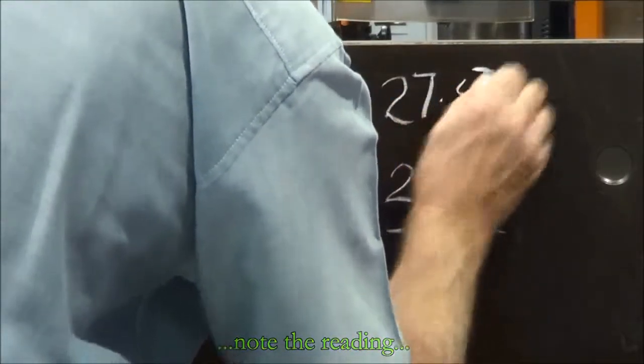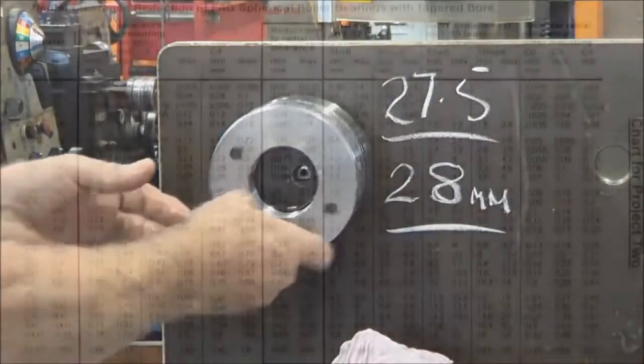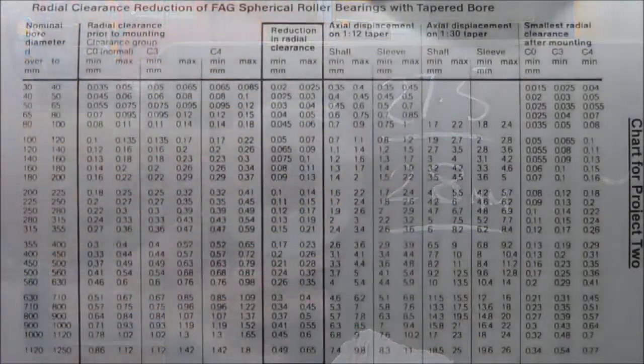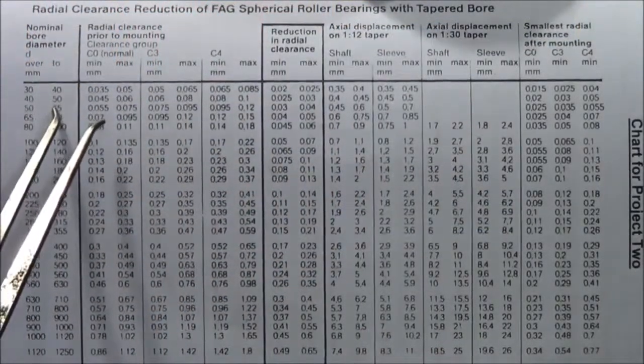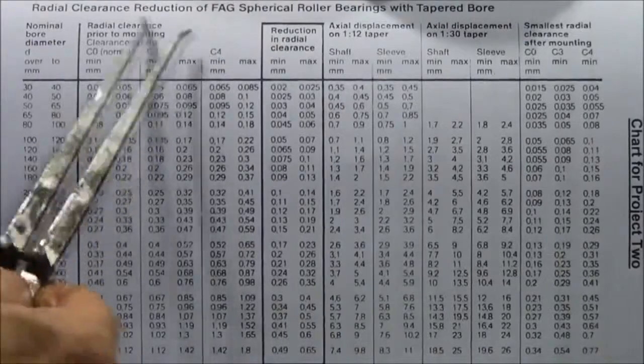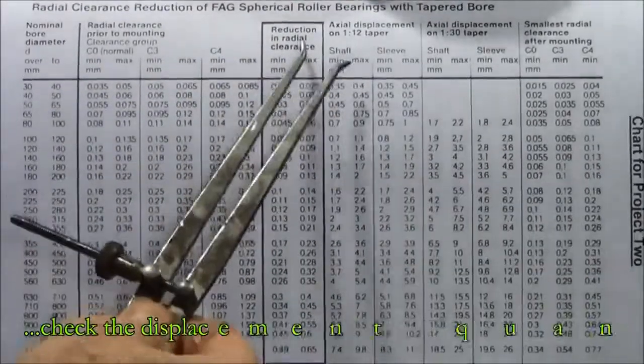So the bearing has moved along half a millimeter. Let's have a look at the specifications and see what is called for in the axial reduction or axial displacement.